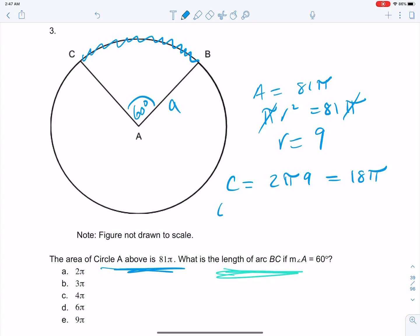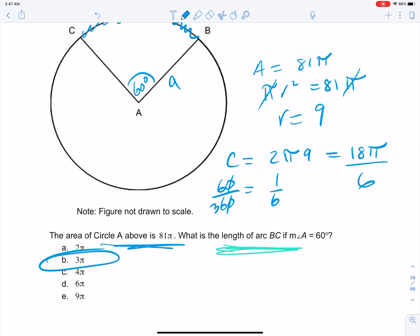And it tells us that angle A is 60 degrees. Well 60 out of 360 simplifies to one sixth, so it's the same thing as taking this 18 pi, dividing it by 6, and we get 3 pi. That's it, y'all.